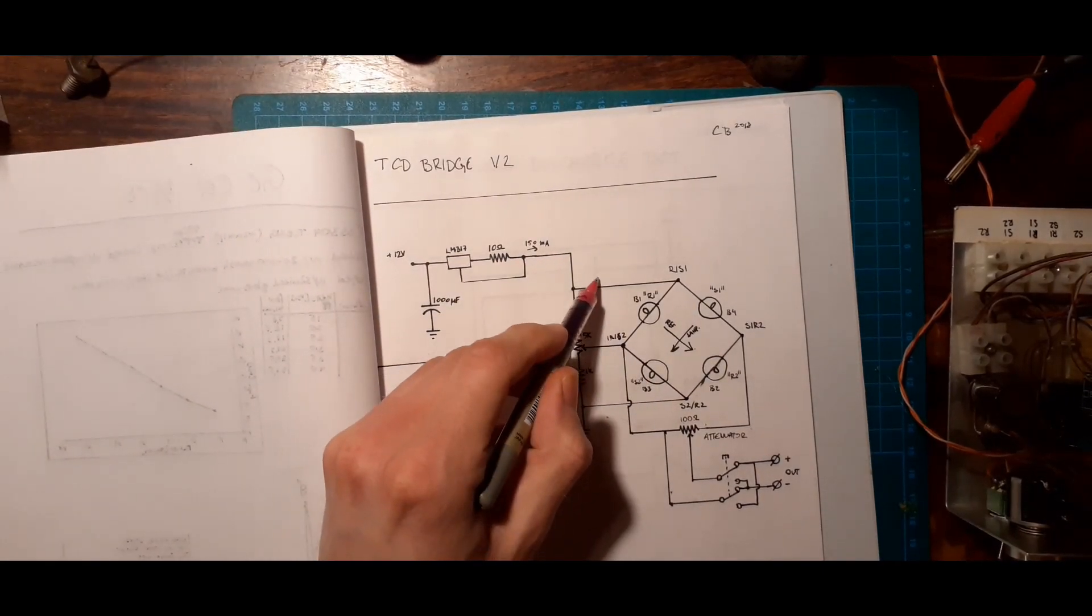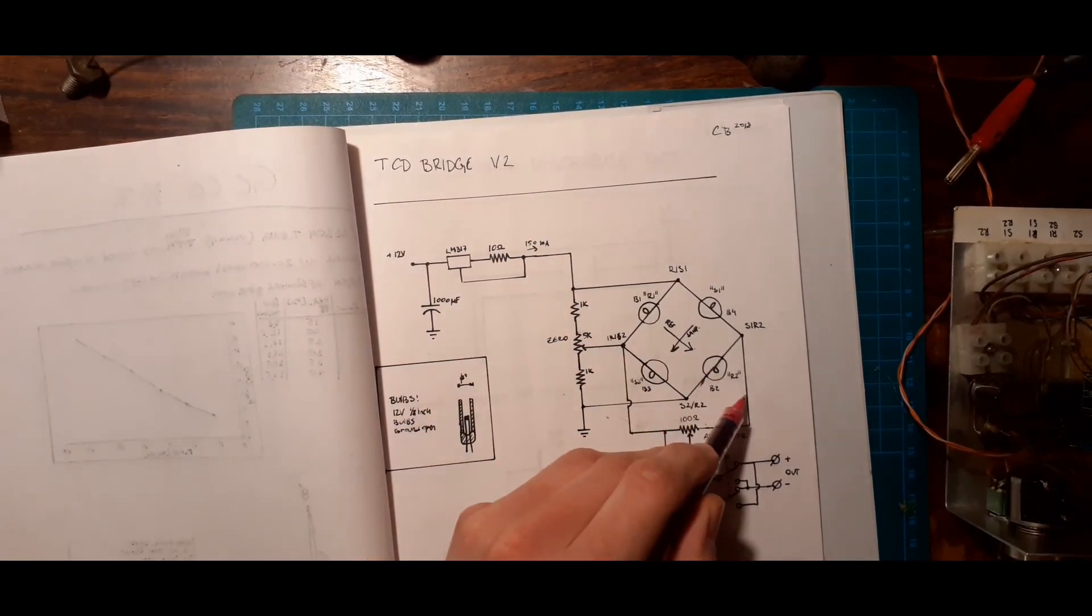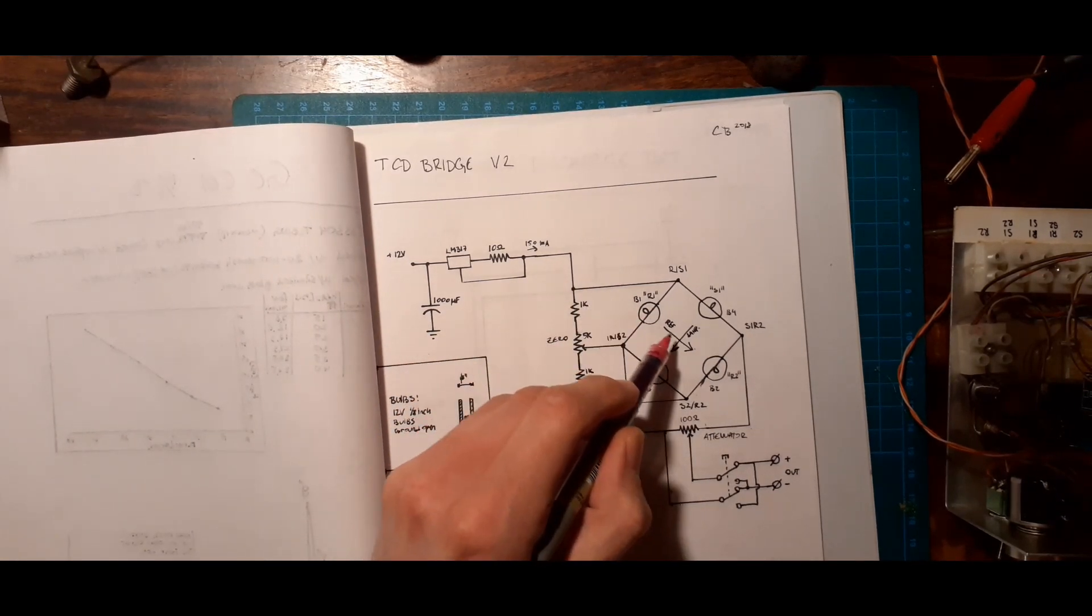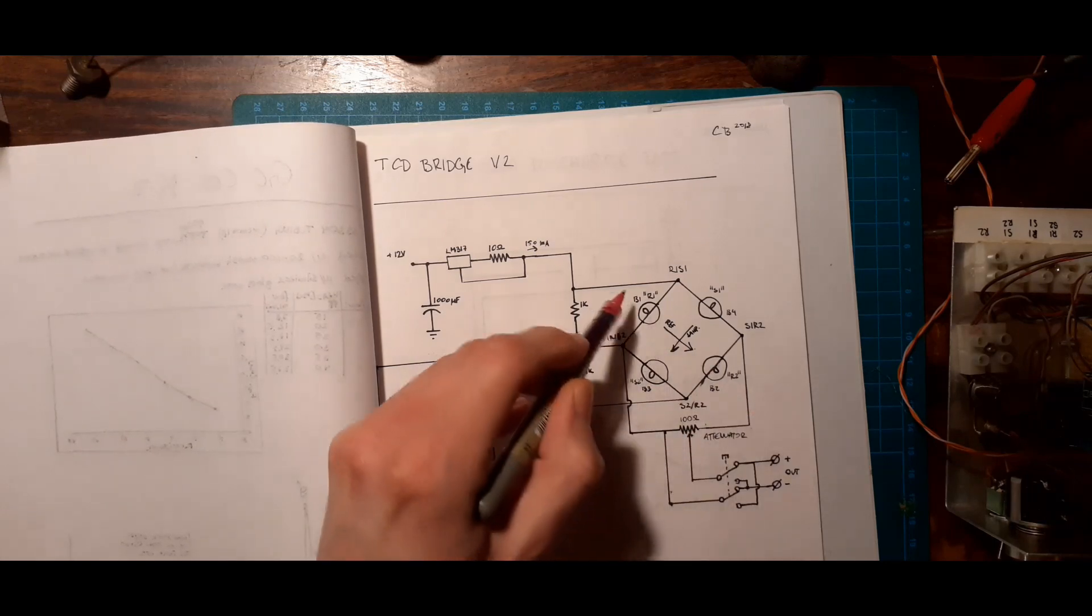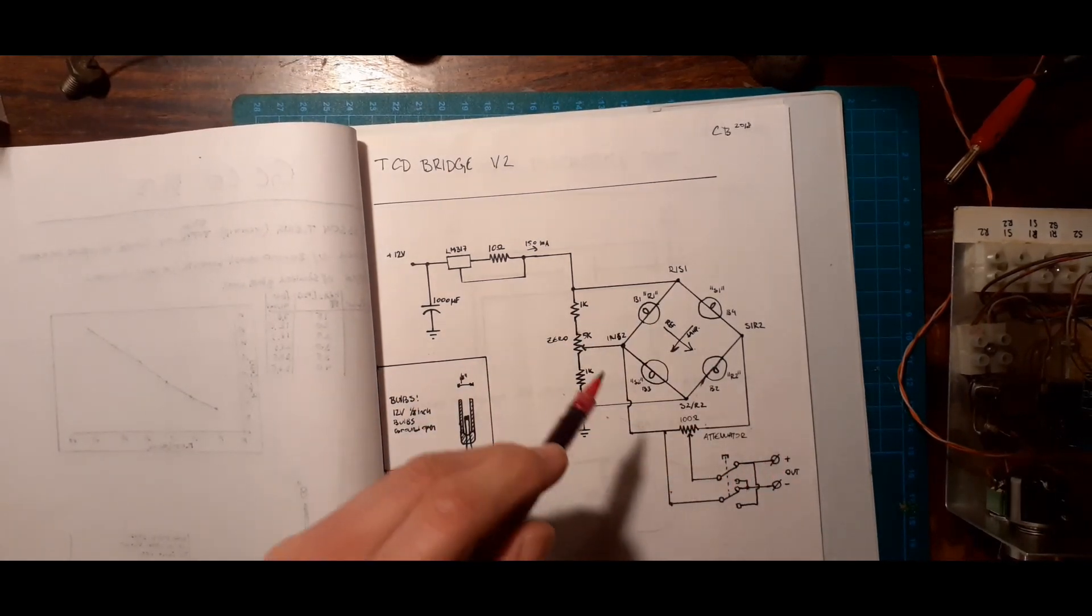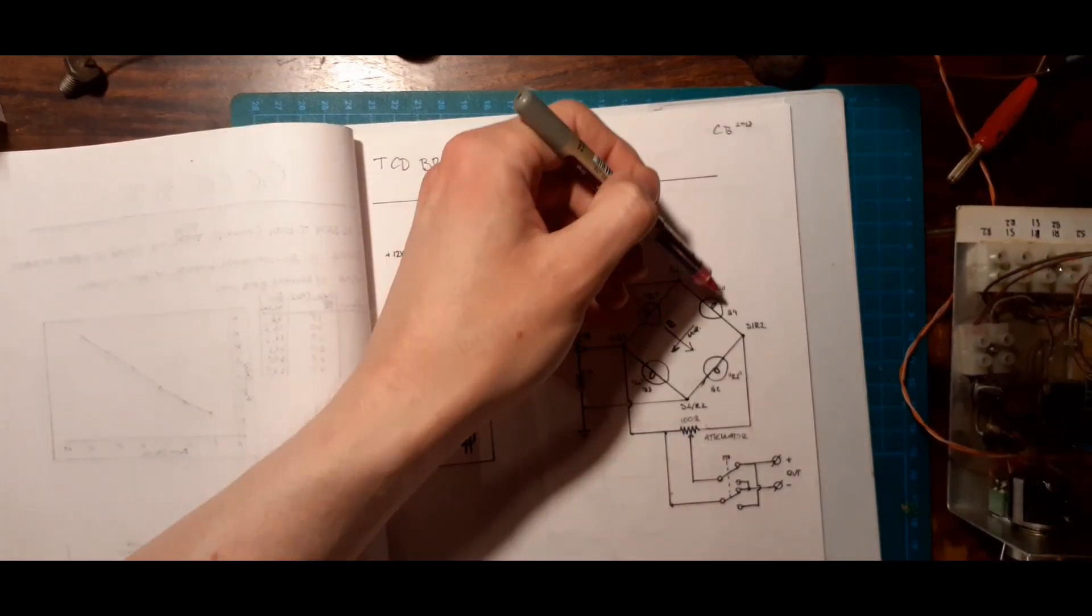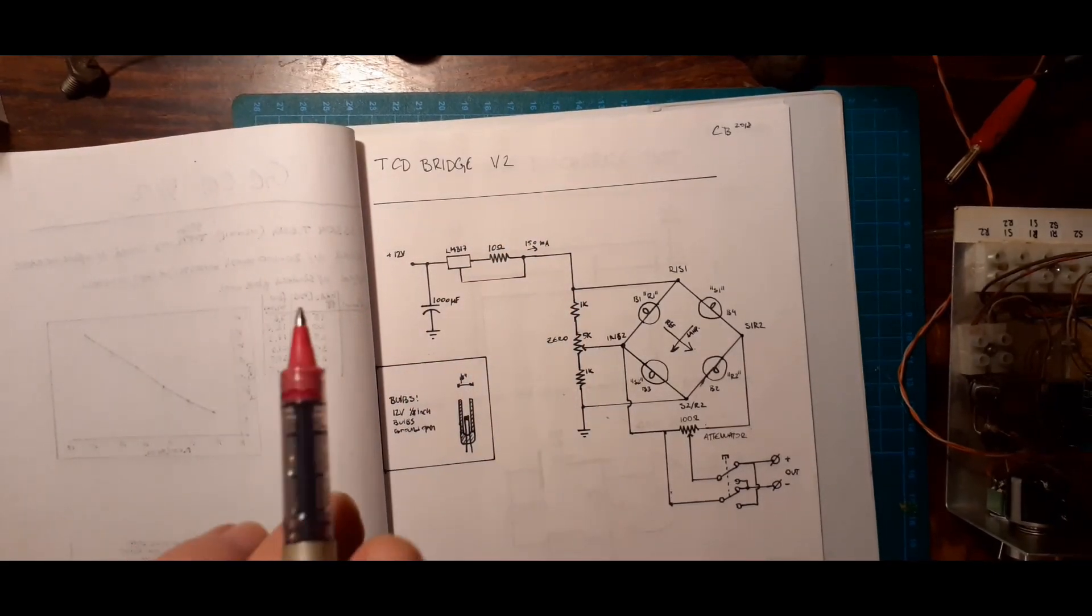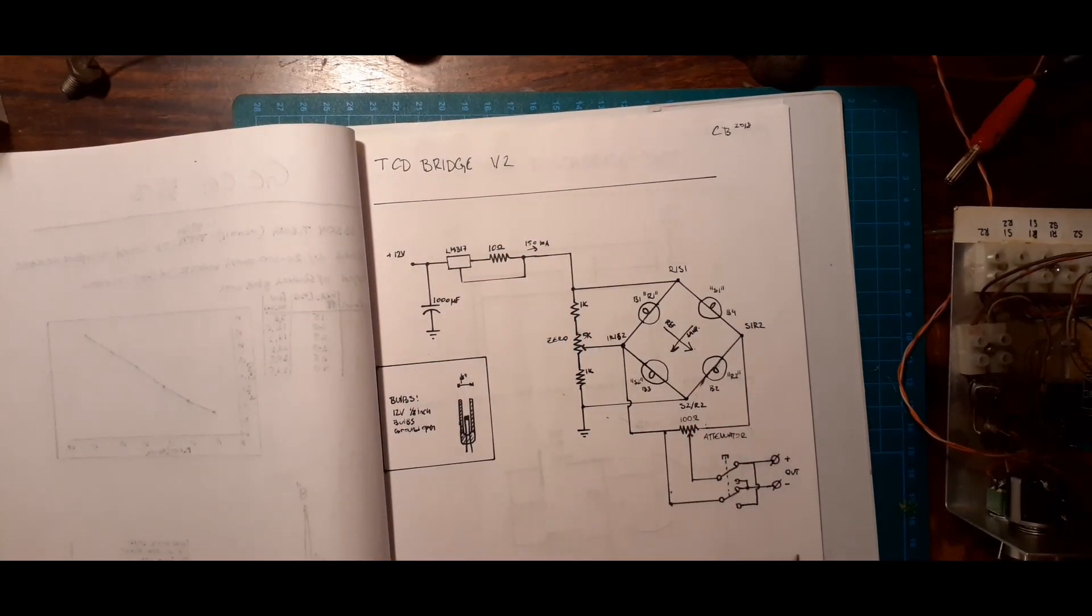What will happen is that there will never be a change in the reference flow. It'll have the same thermal conductivity and wick the same amount of heat off of the filaments at all times, but once an analyte passes over the other two filaments, the amount of heat wicked off will either increase or decrease. It'll usually decrease, since helium is the gas with one of the highest thermal conductivity out there.